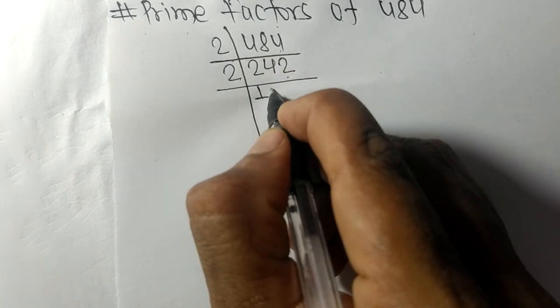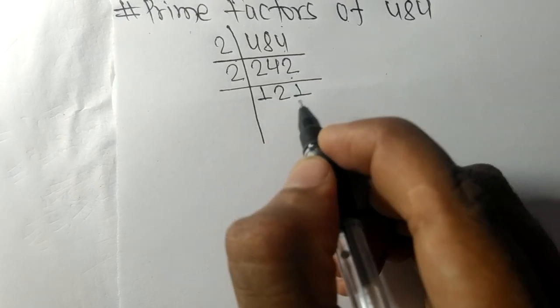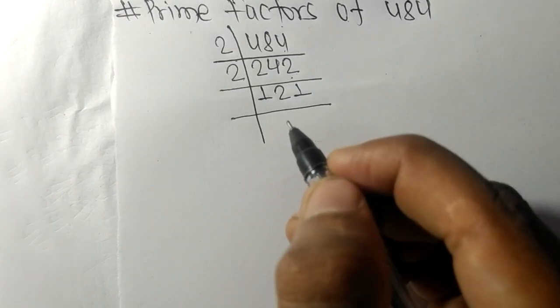2 times 121 equals 242. Now we got here 121, which is exactly divisible by 11.